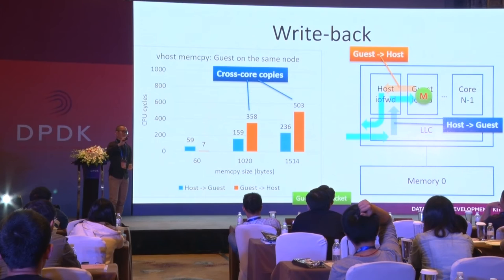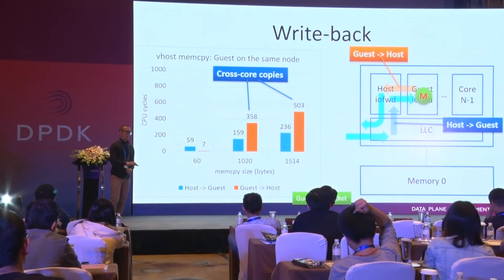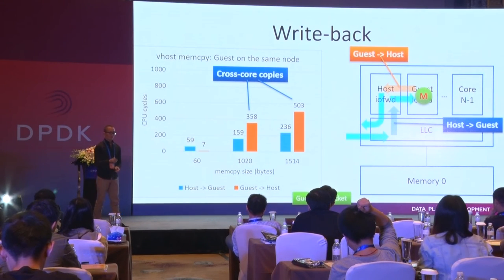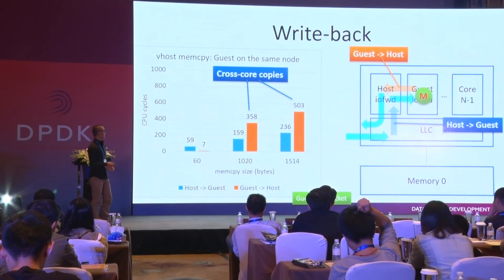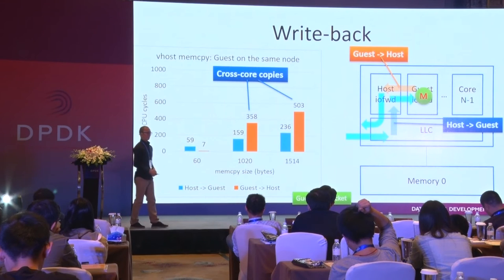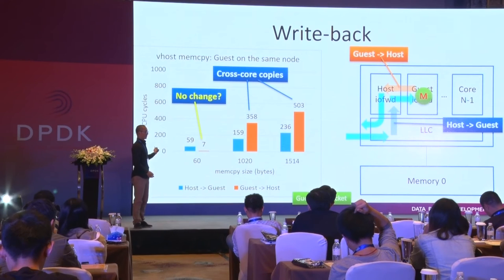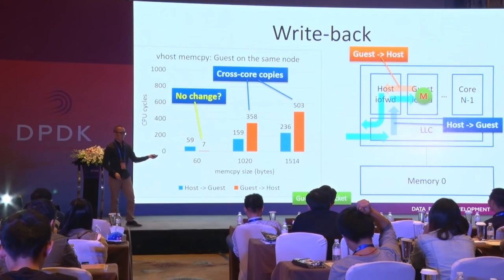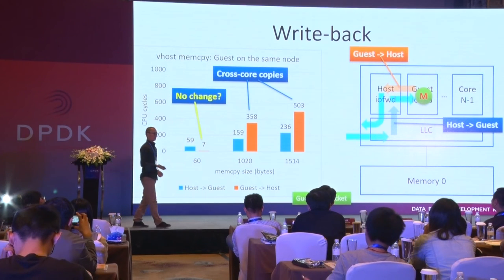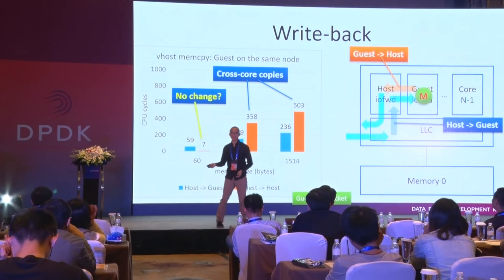That is to say, we need core 1 to write back the cache, and then the host should go there and use it. That will help maintain the consistency of the cache. Now everything looks normal. However, there's another issue: why, for this 64-byte memory copy, has there been no change? It's the same as before. It has no changes — I do not understand it yet. So that is why we need to look at the source code.